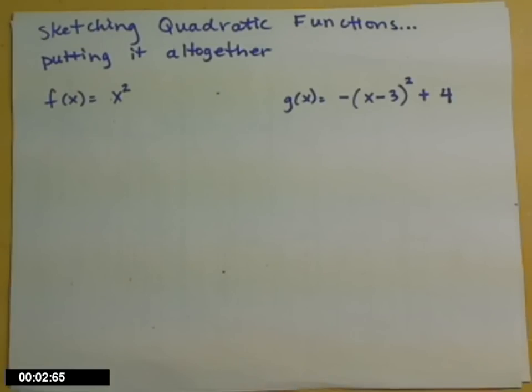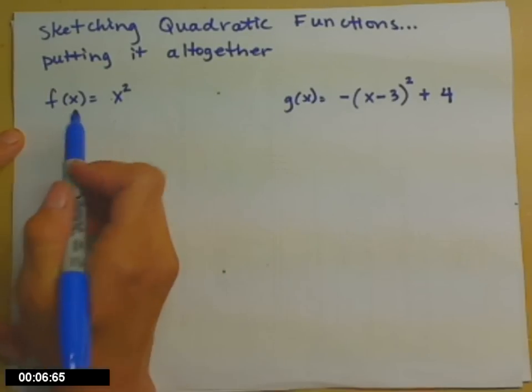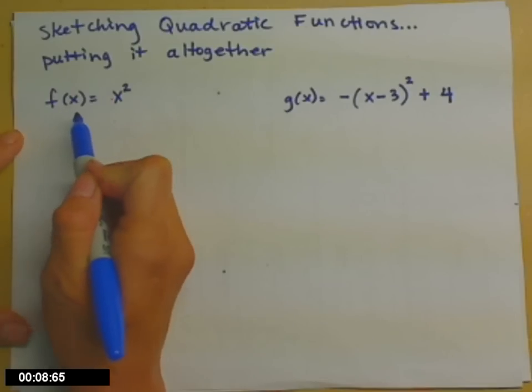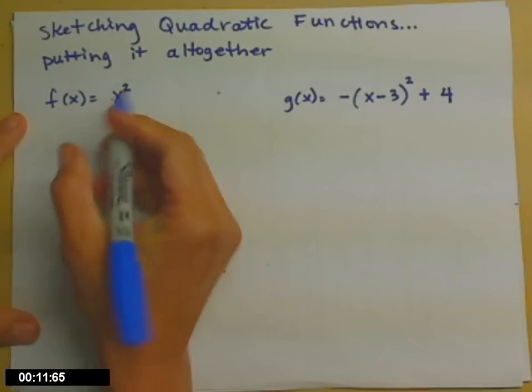So let's put together what we've learned about sketching quadratic functions, plus some stuff we'd remember from before. So first of all, a quadratic function, f of x equals x squared. The quadratic part is the squared part.